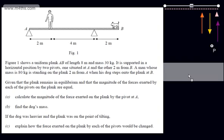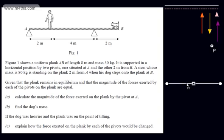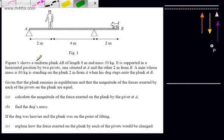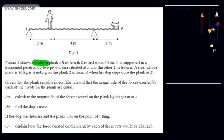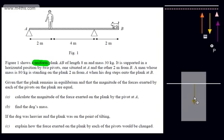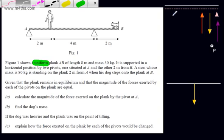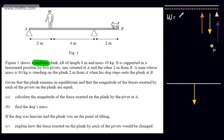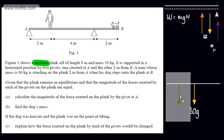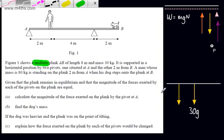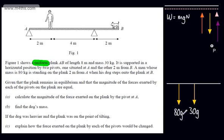Let's model this up. We've got a uniform plank — the word uniform is really important. If we have a uniform plank or uniform rod, then the weight will act in the centre. We're going to model this as a force: weight is mass times gravity, so W = mg Newtons. The plank has a mass of 30, so the weight acting down will be 30g Newtons. The man's weight will also be acting down — he is standing 2 metres from A, so this force is 80g Newtons since his mass is 80 kilograms.